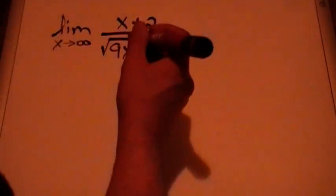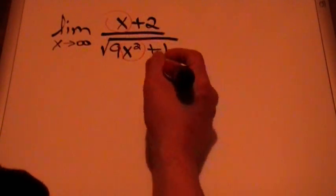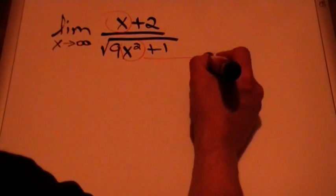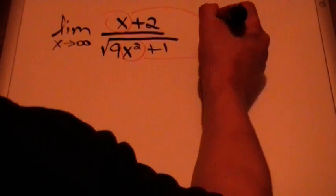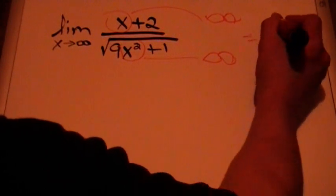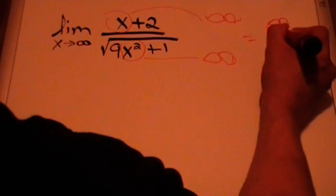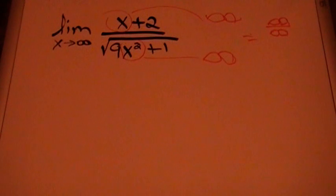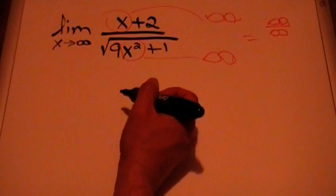If we put a large value for x, we will see that the numerator is going to approach infinity, and the denominator is also going to approach infinity. So we're going to end up having infinity over infinity — an indeterminate form.